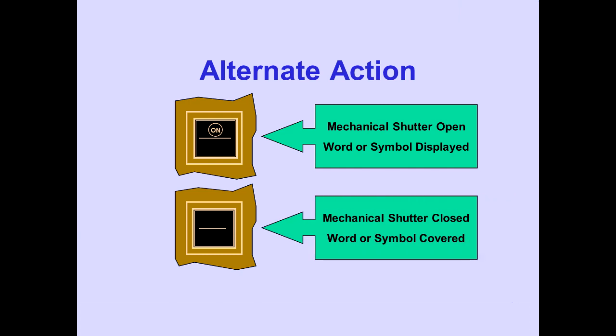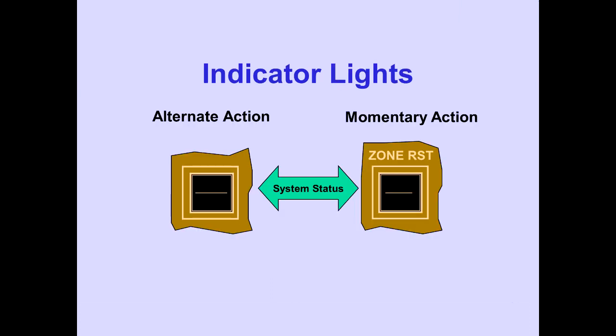Momentary action switches have no mechanical shutter. Both alternate action and momentary action switches have integral indicator lights. Indicator lights illuminate to indicate system status. Individual switches and indicator lights are discussed in their respective module.